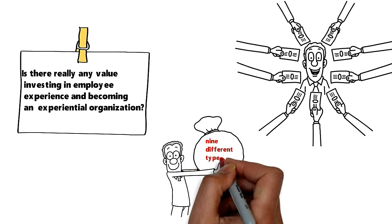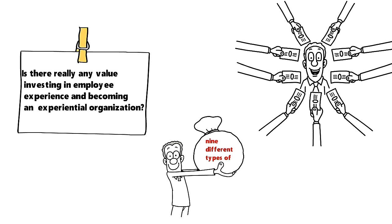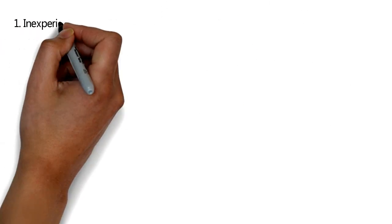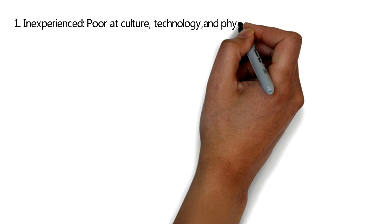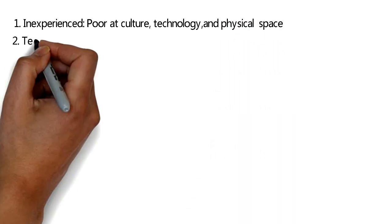According to Morgan, there are nine different types of organization and where they stand when it comes to employee experience. 1: Inexperienced—poor at culture, technology, and physical space.